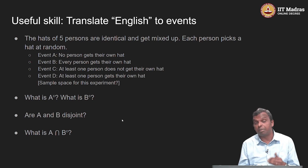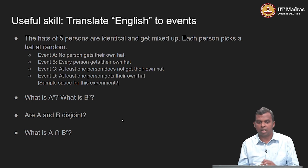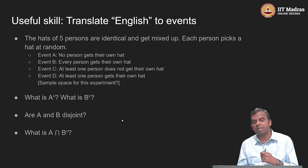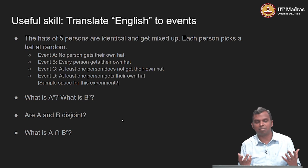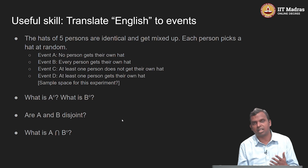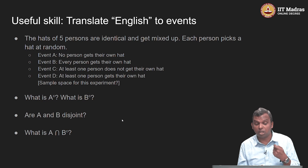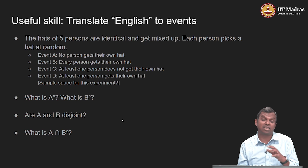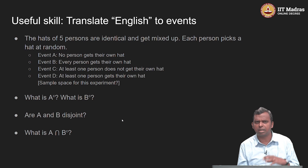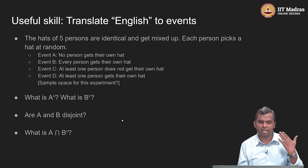Similarly, B complement will end up being C. Every person gets their own hat is B, and C is at least one person does not get their own hat. C occurs when B did not occur — when B occurs, every person gets their own hat; when B does not occur, there must be at least one person who did not get their own hat. So B complement equals C and A complement equals D.